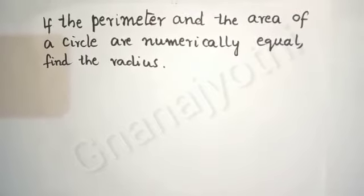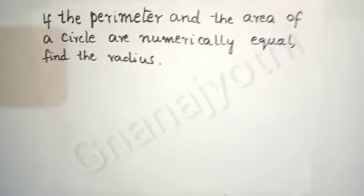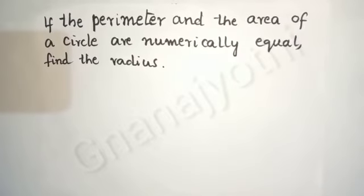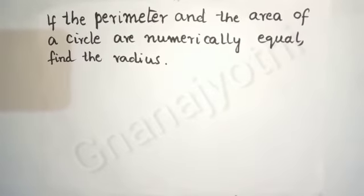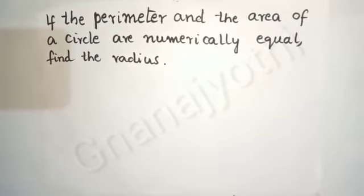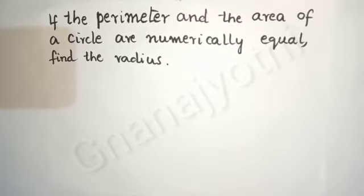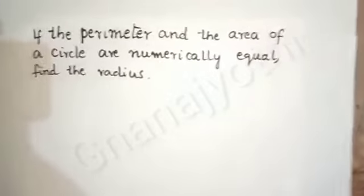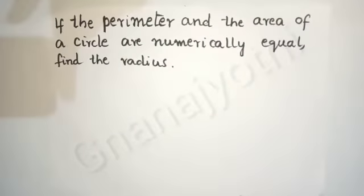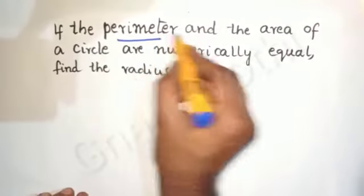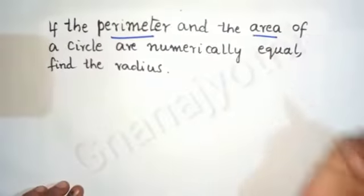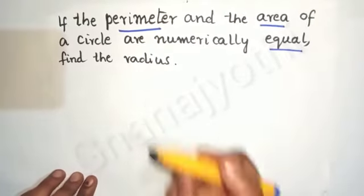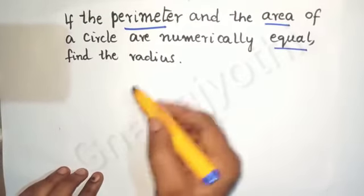This is one of the most important questions for the examination. It can be asked for two marks or in a multiple choice question for one mark. The question is: if the perimeter and area are numerically equal, we need to find the radius.